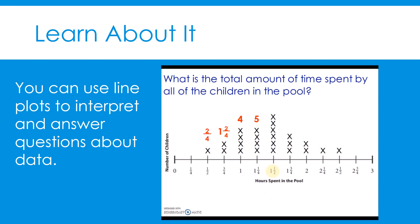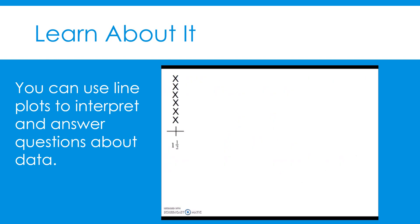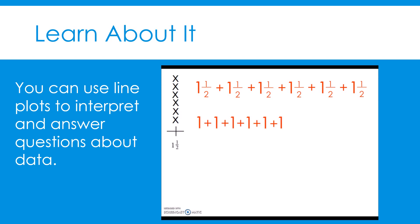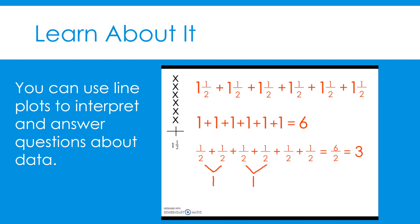Next, we have one and one-half. Wow, there are six X's above one and one-half, meaning there are six data points that represent one and one-half. We are going to add one and one-half six times. If we add the whole numbers first, we add one six times, and that equals six. Next, we will add one-half six times — that is the same as six-halves. Six-halves is equivalent to three. You can also see three by noting that one-half and one-half is one whole, another two-halves is one whole, and another two-halves is one whole — that's three. If we add six and three, we get nine. Those six X's above one and one-half represent a total of nine hours spent in the pool.